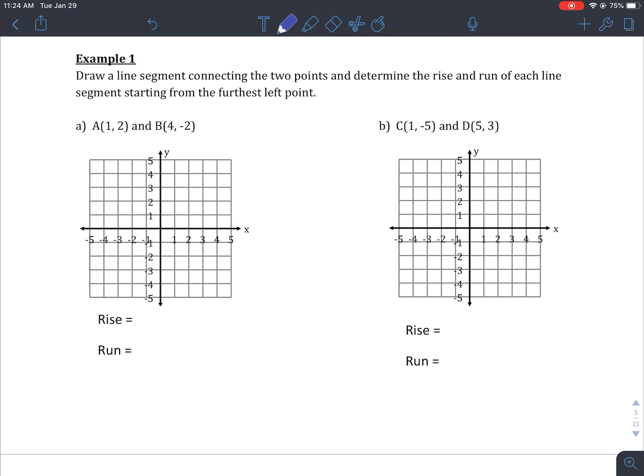So example one then says, draw a line segment connecting the two points and determine the rise and run of each line segment starting from the furthest left point. So if we plot these points first, A is 1, 2, there's A, B is 4, negative 2, so there's B. And here's my line segment, I can connect them.